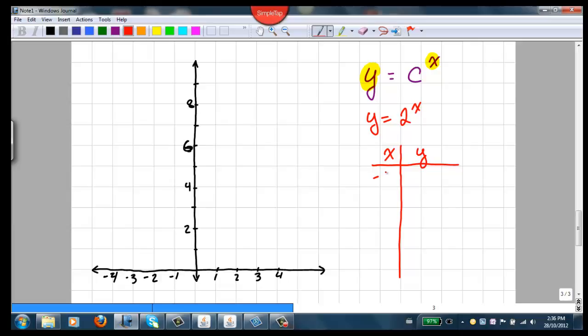But let's work with some simple things like negative 3, negative 2, negative 1, 0, 1, 2, and 3. If x is negative 3, then 2 to the negative 3 equals 1 over 2 cubed, or 1 over 8. 2 to the negative 2 is 1 over 2 squared, or 1 over 4. 2 to the negative 1 is 1 over 2, or 1 half. 2 to the 0 is 1, 2 to the 1 is 2, 2 squared is 4, and 2 cubed is 8.